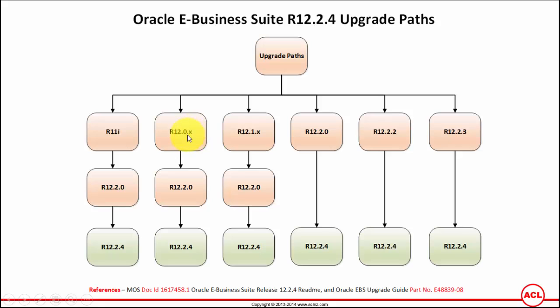The 'x' stands for the exact version number — for example, 12.0.1 or 12.0.3 and so on. Similarly, 12.1.3 or 12.1.7 and so on.